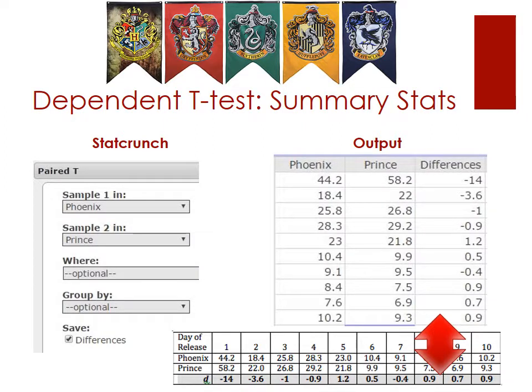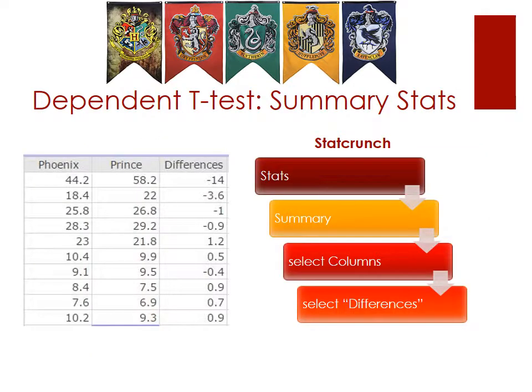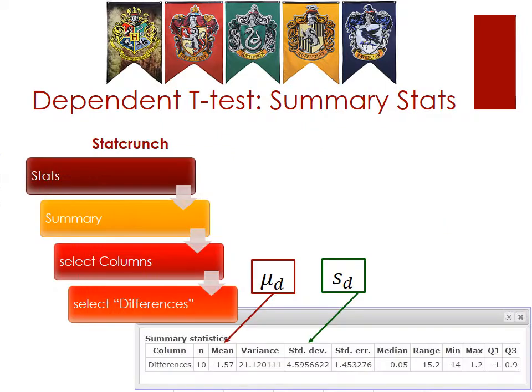Now that you have your column of differences, go to Stats > Summary Stats > Select Columns and select the differences column, since that's what we're now interested in. When you run it, you'll get output showing the mean — which is your mu of d — and the standard deviation — which is your s of d.